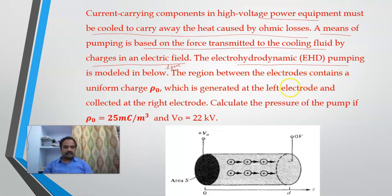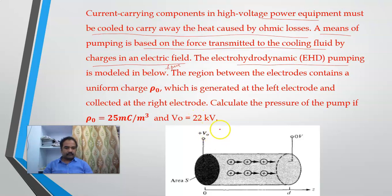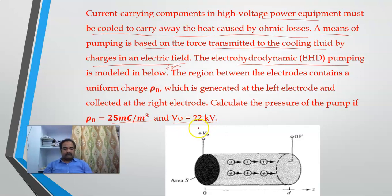The region between the electrodes contains a uniform charge rho naught, which is generated at the left electrode and collected at the right electrode. Calculate the pressure of the pump if rho naught is equal to 25 millicoulomb per meter cube and V naught is equal to 22 kV. Now we are going to determine the pressure of the pump.